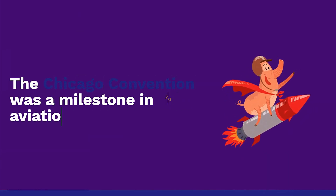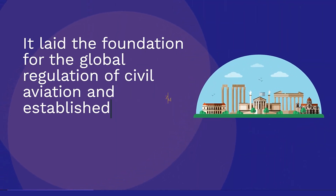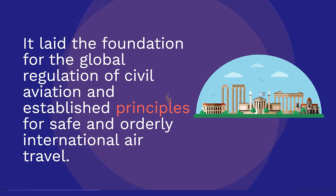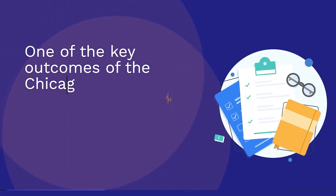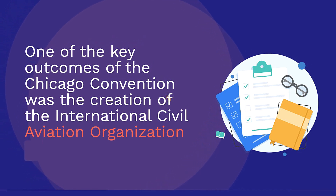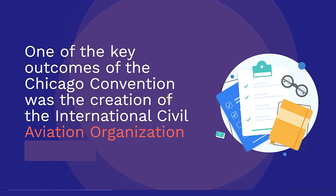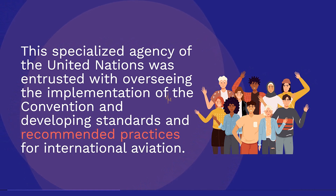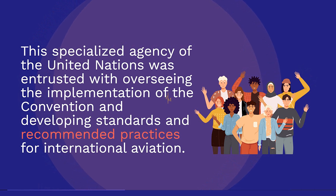The Chicago Convention was a milestone in aviation history. It laid the foundation for the global regulation of civil aviation and established principles for safe and orderly international air travel. One of the key outcomes of the Chicago Convention was the creation of the International Civil Aviation Organization, ICAO — the specialized agency of the United Nations entrusted with overseeing the implementation of the Convention and developing standards and recommended practices for international aviation.